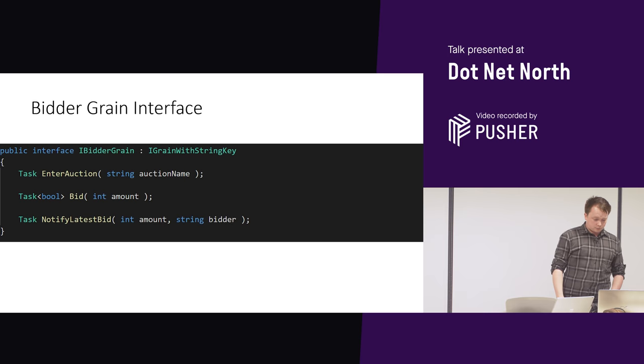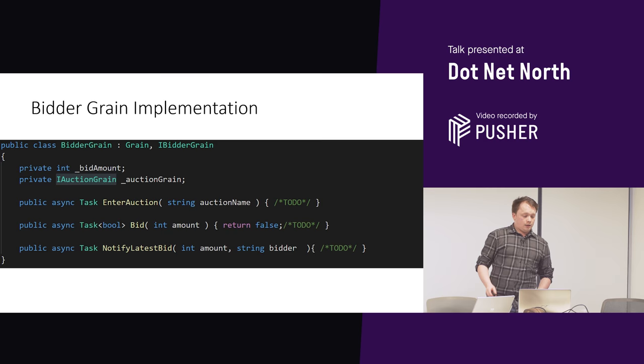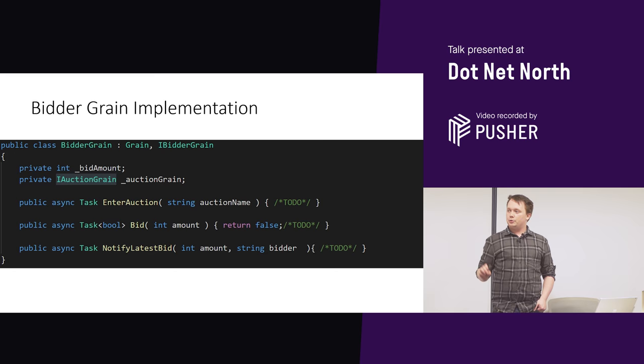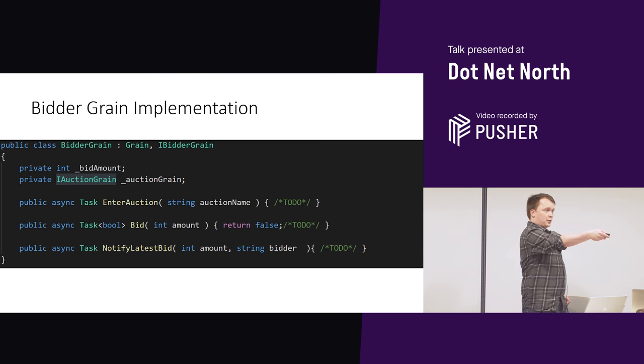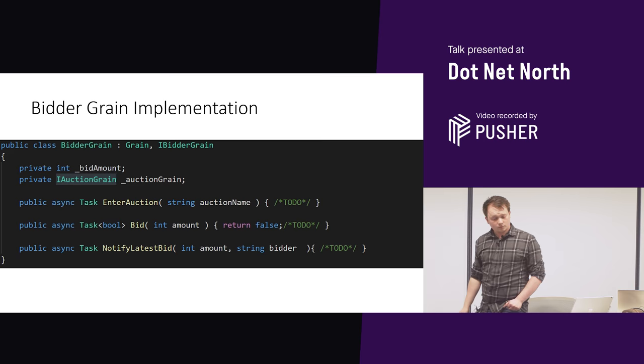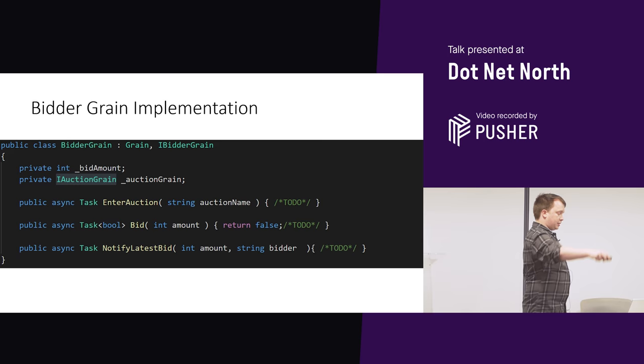We're going to look at the implementation of our BidderGrain. We'll keep things short and look at each individual method and how we would implement it. In our skeleton we have our bid amount — that's how much we bid at that time — and we have whatever auction we're in. Notice that this is called IAuctionGrain, meaning we have a reference to a grain that exists somewhere.